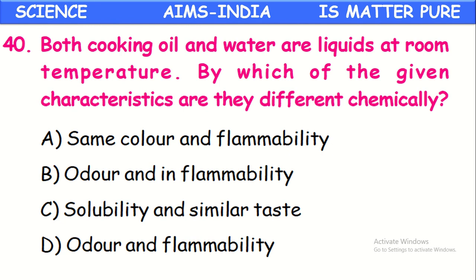Both cooking oil and water are liquids at room temperature. By which characteristics are they different chemically? Both might have the same color, but they have different odor — cooking oil has an organic smell while pure water has no smell. And cooking oil is flammable — it can catch fire and is combustible — whereas water is a non-combustible liquid. So the difference between the two is odor and flammability.